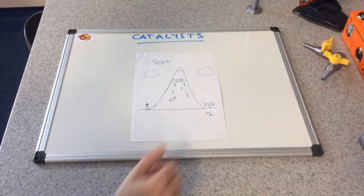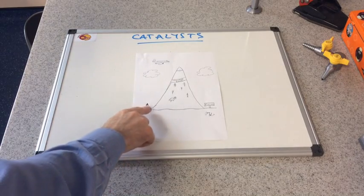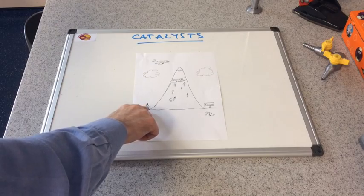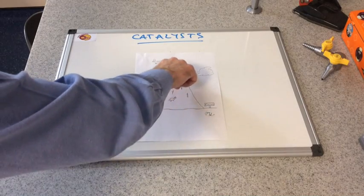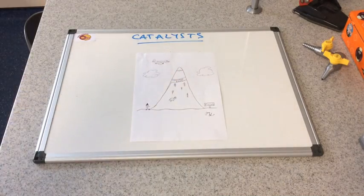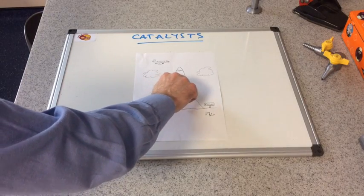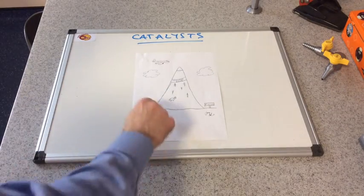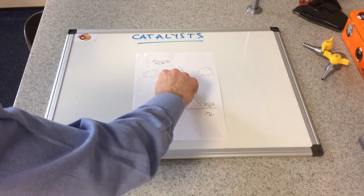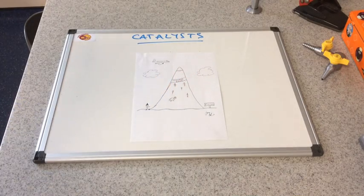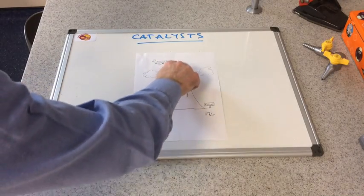I'm going to use this sketch to explain what catalysts do. I've got a person who needs to get from the start to the finish. One route goes to the summit of the mountain and down the other side — a high amount of energy required. Then there's a catalyzed route: an alternative path where the person climbs three quarters of the way up, goes around the side, and down to the finish. This catalyzed route has a lower maximum energy than the uncatalyzed route.